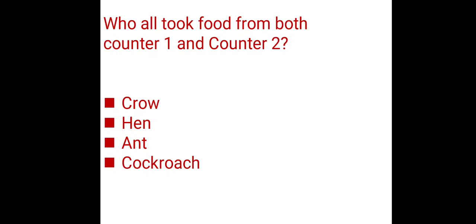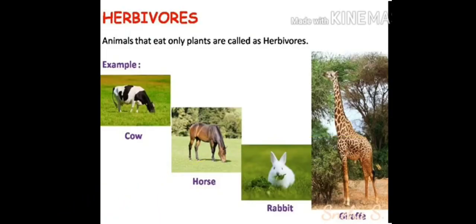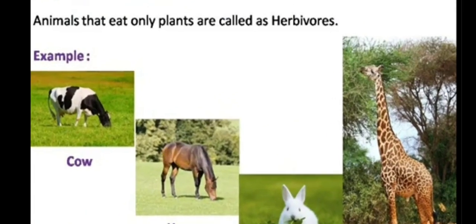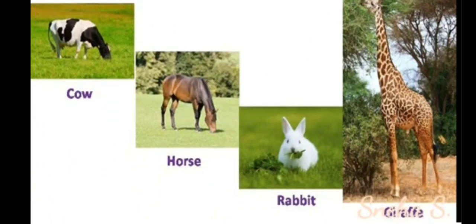So three types of animals we have studied: herbivores, carnivores, and omnivores. Herbivores are animals that eat only plant food. Carnivores are animals that eat only animal food. Omnivores eat both plant food and animal food. Animals that eat only plants are herbivores — examples: cow, horse, rabbit.